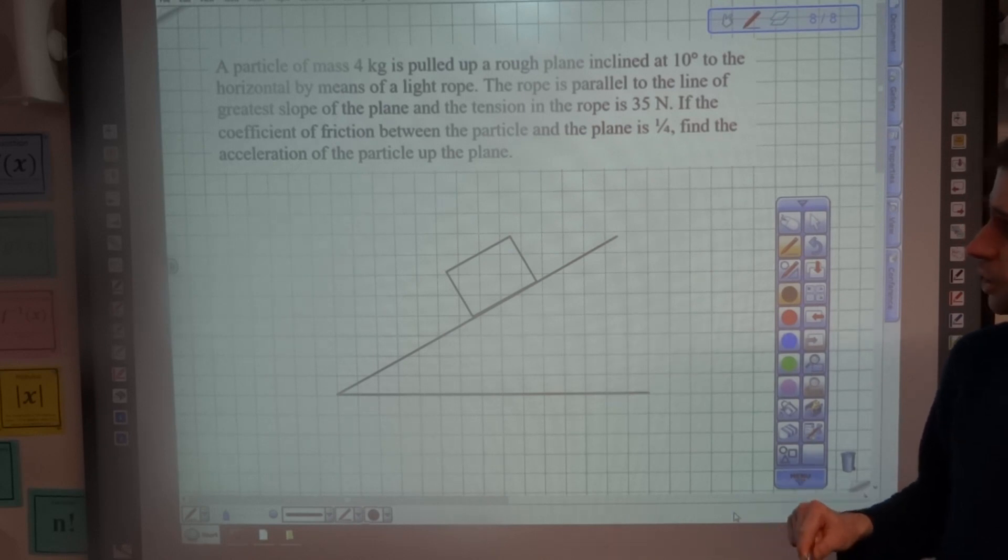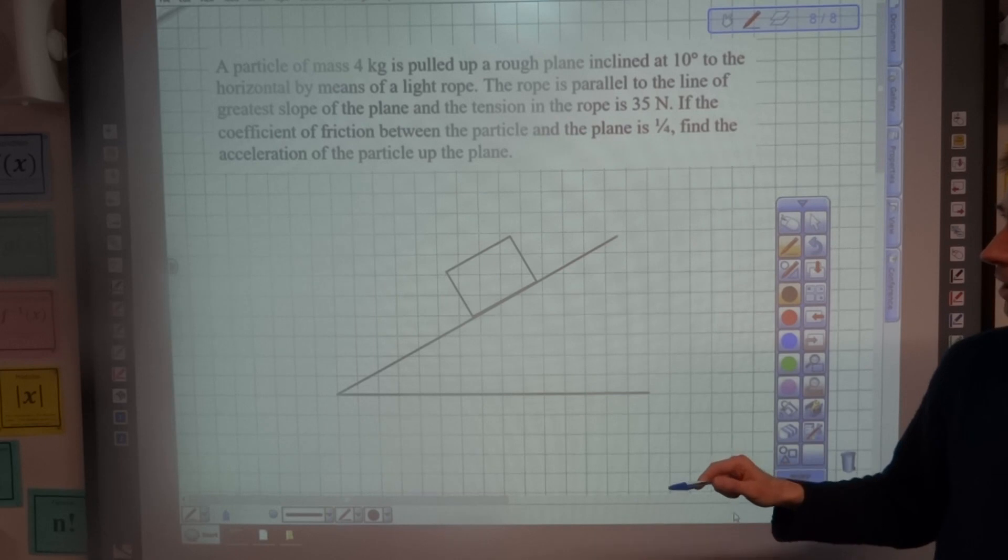If the coefficient of friction between the particle and the plane is one quarter, find the acceleration of the particle up the plane.